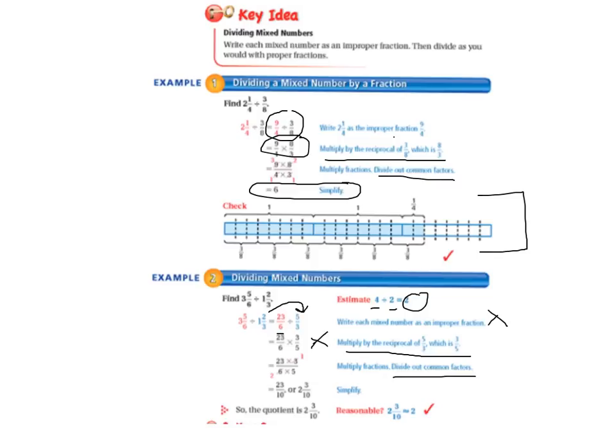When we multiply, we divide out the common factors. 3 goes into 6 two times, so our 3 becomes a 1 and our 6 becomes a 2. 5, unfortunately, does not go into 23, so we have to leave that alone. We multiply the top. 23 times 1 equals 23. 2 times 5 equals 10. But that's still an improper fraction. So we divide the top by the bottom, and we come up with 2 and 3/10 when we simplify. So the quotient is 2 and 3/10. Is it reasonable? Is it close to our estimate? And the answer is yes.